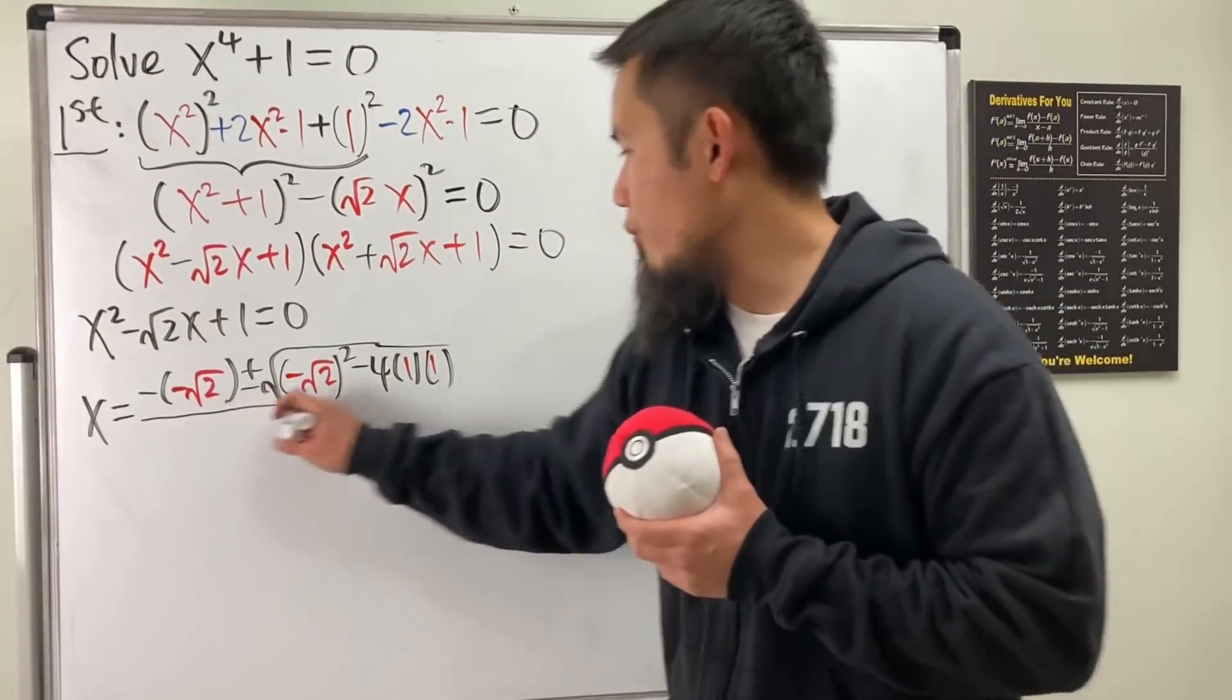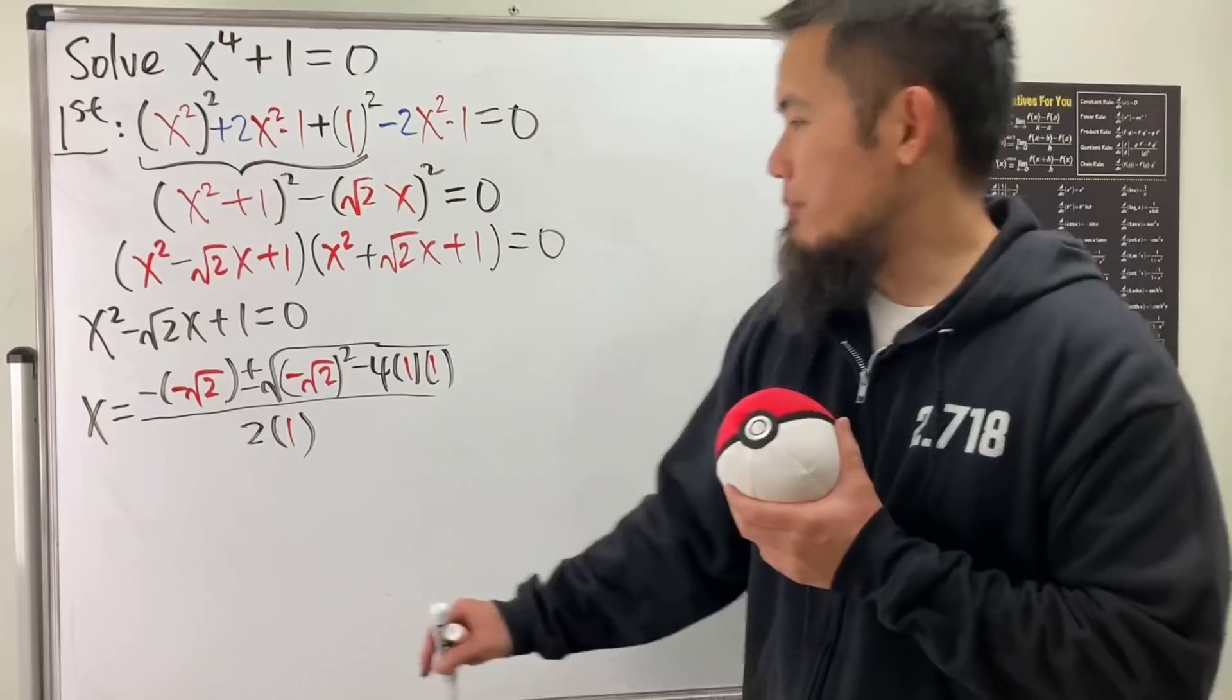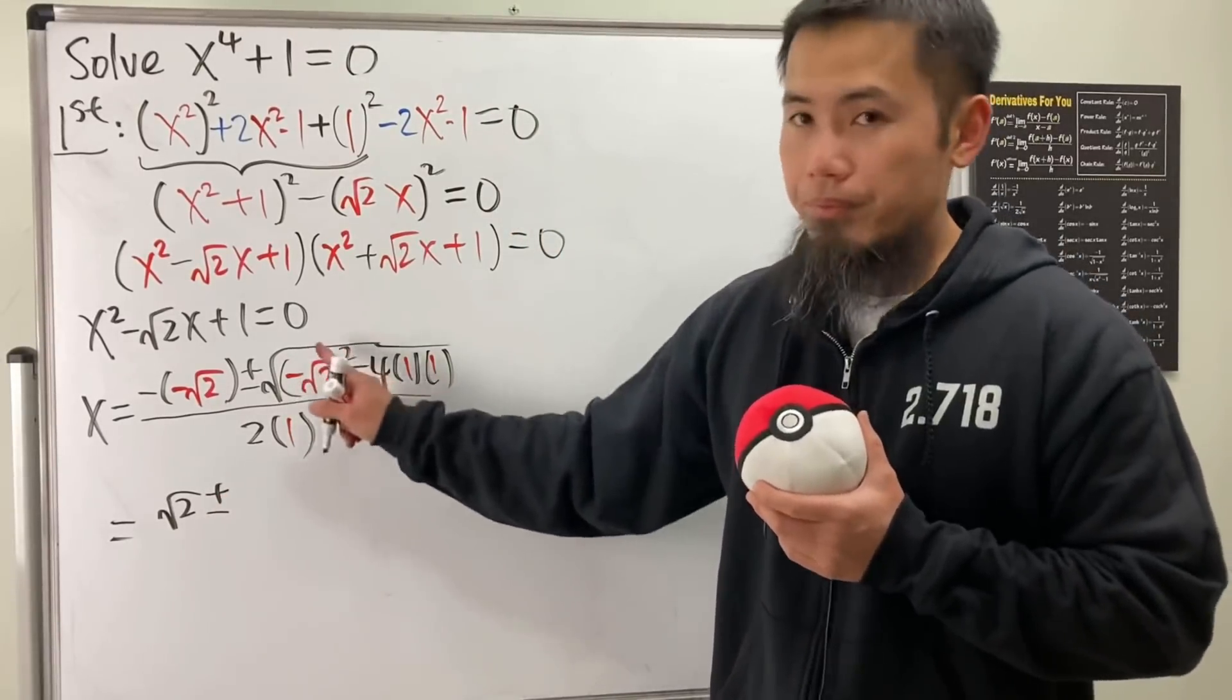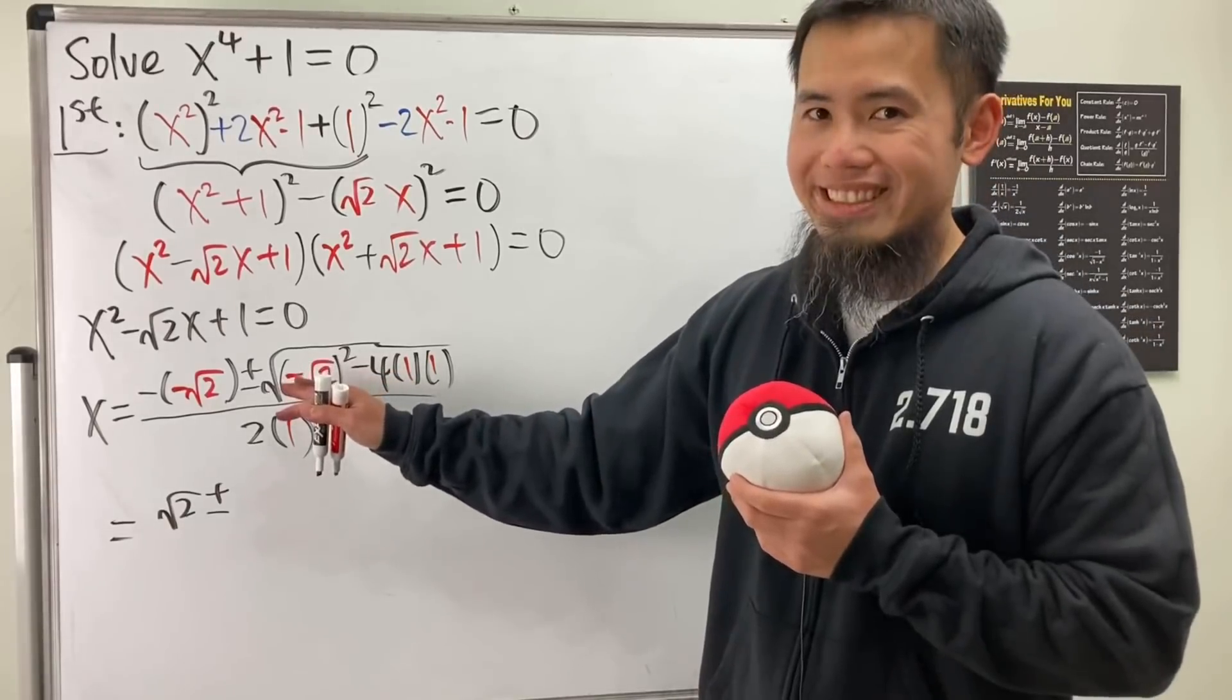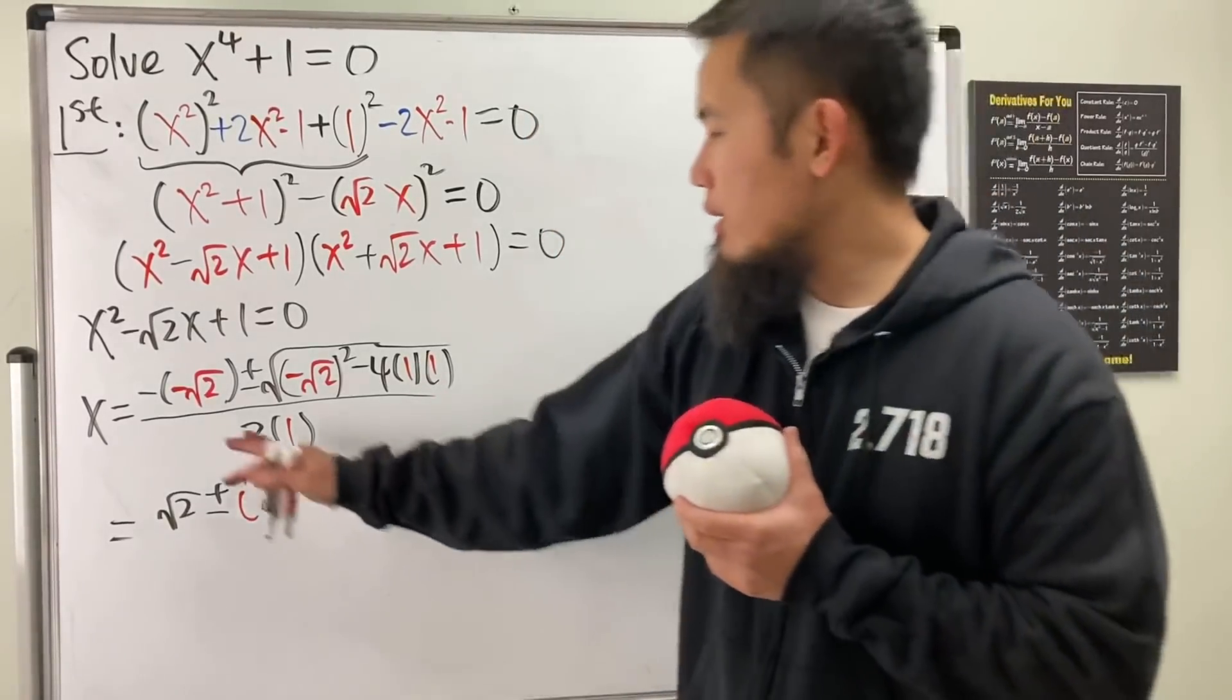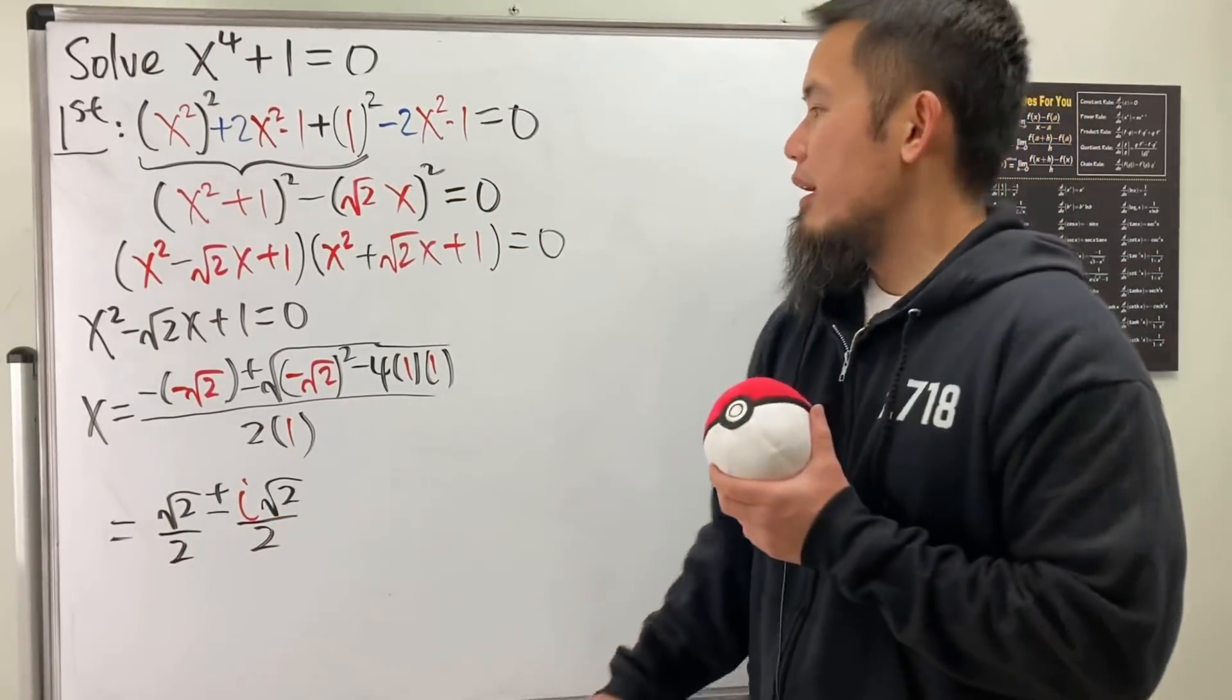Like this and then over 2a is 1, so just like that. All right. And now we just have to simplify this a little bit. Well, this is going to be square root of 2 plus or minus, this is 2 minus 4 which is negative 2. The square root of negative becomes an i and then we have the same square root of 2 right here. And now let me just divide this by 2 here and divide this by 2 here. So that's pretty much it.